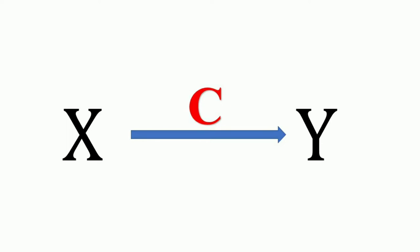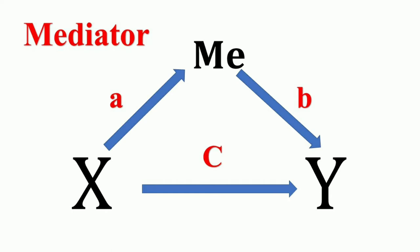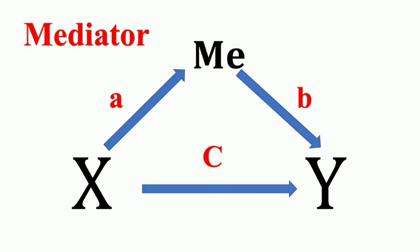Consider a variable X that is assumed to cause another variable Y. The variable X is called the causal or independent variable, and the variable it causes, Y, is called the outcome or dependent variable. The path C in this model is called the total effect. Now introducing the third variable, the mediating factor: the effect of X on Y may be mediated by a mediating variable M, and X may still affect Y directly. Path C is called the direct effect. Complete mediation is the case in which X no longer affects Y after M has been controlled, making path C equal to zero.